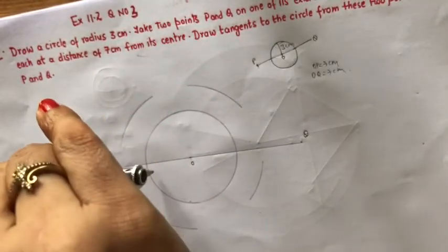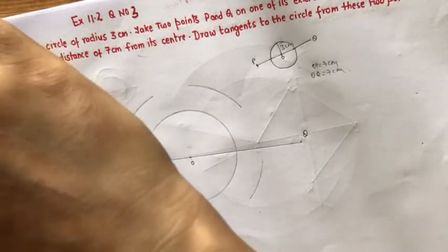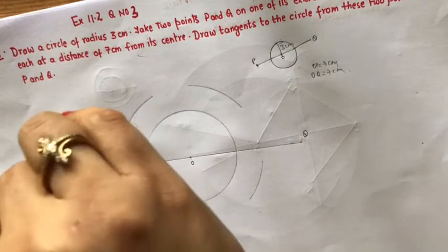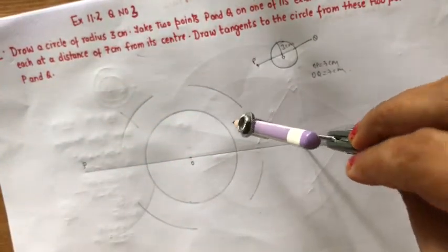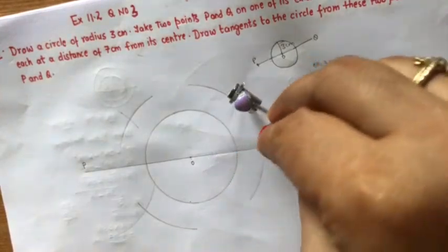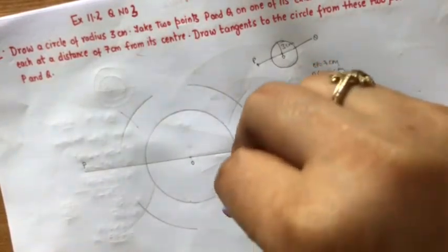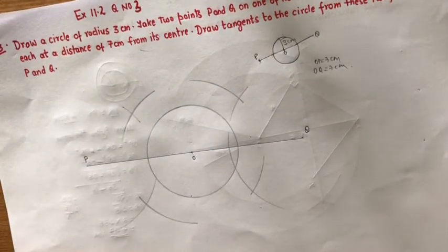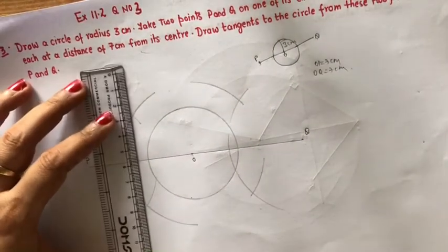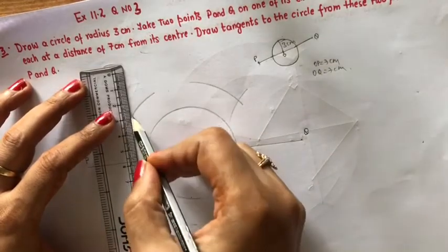Now keep it with the same radius, keep it at P. Same radius keep it at Q. Now next step, join these points.